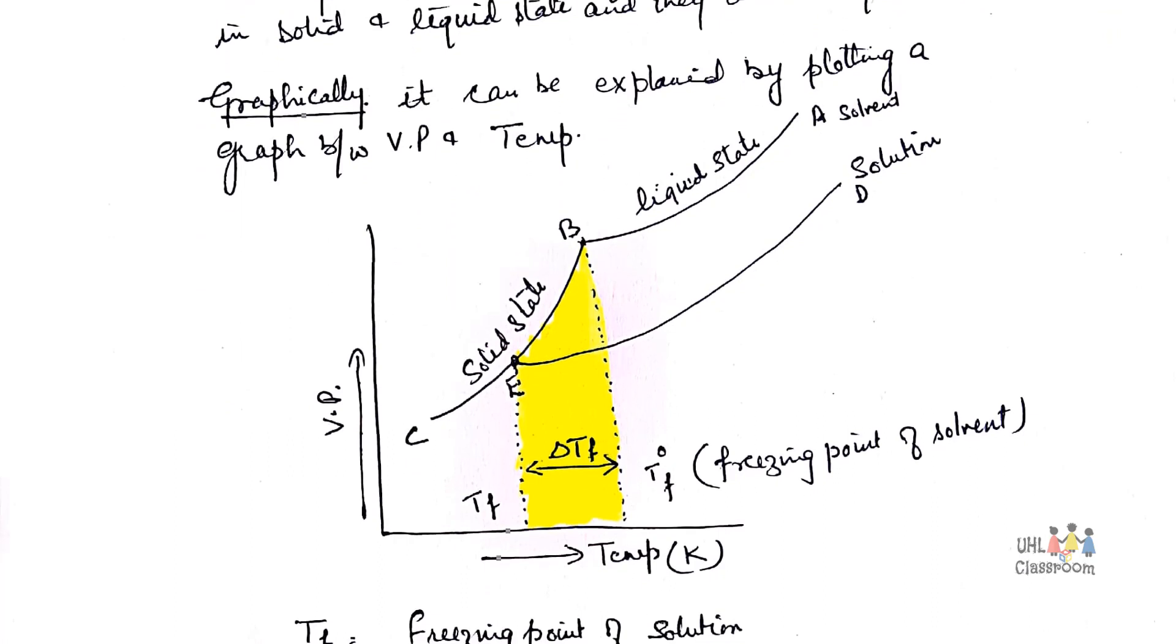Graphically it can be explained by plotting a graph between vapor pressure and temperature. At point V, for a solvent A, vapor pressure of the solid phase and vapor pressure of the liquid phase, they become equal at point B and the temperature corresponding to this T0F will be the freezing point of solvent.